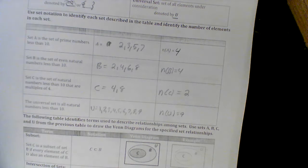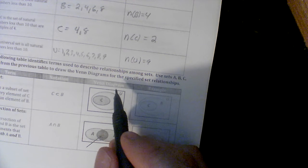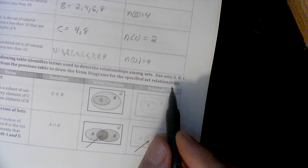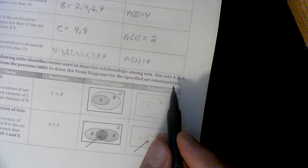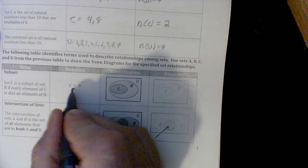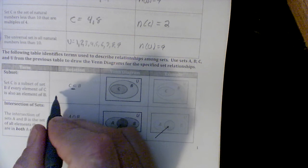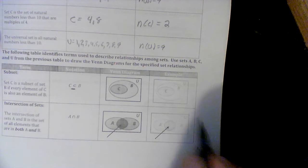Now sometimes those sets interact. So we're going to hit a table here. And this says use the following table to describe relationships among sets A, B and C from U and from the previous table draw a Venn diagram. So, this term right here means subset. Set C is a subset of B if every element of C is also an element of B.